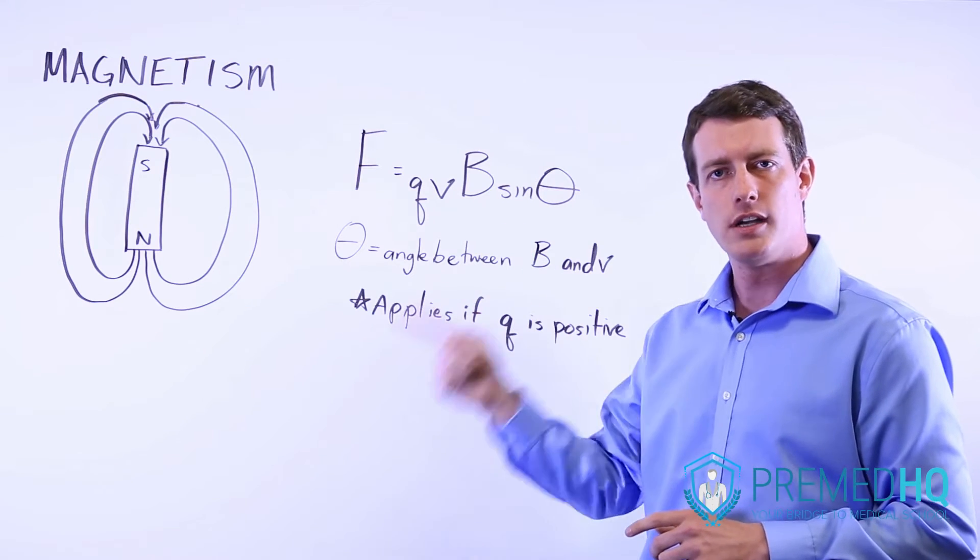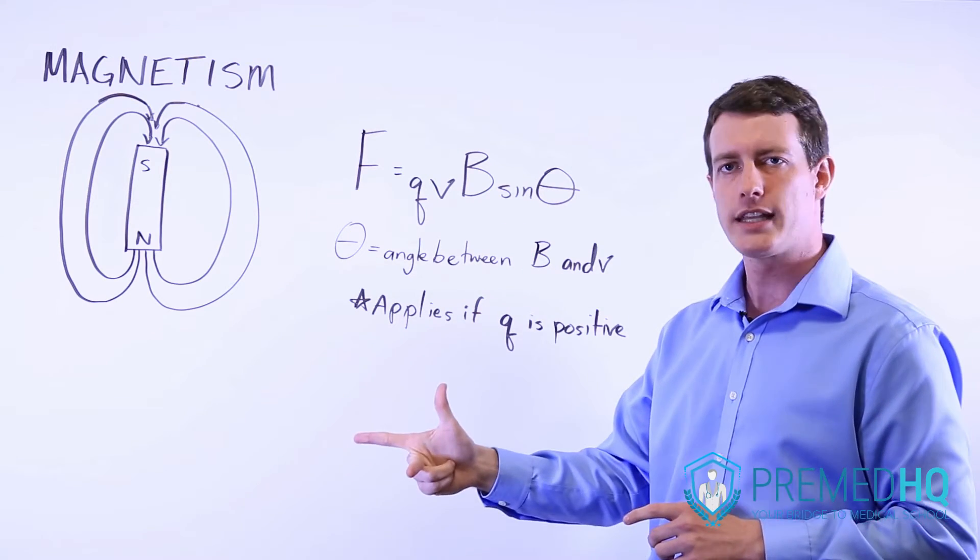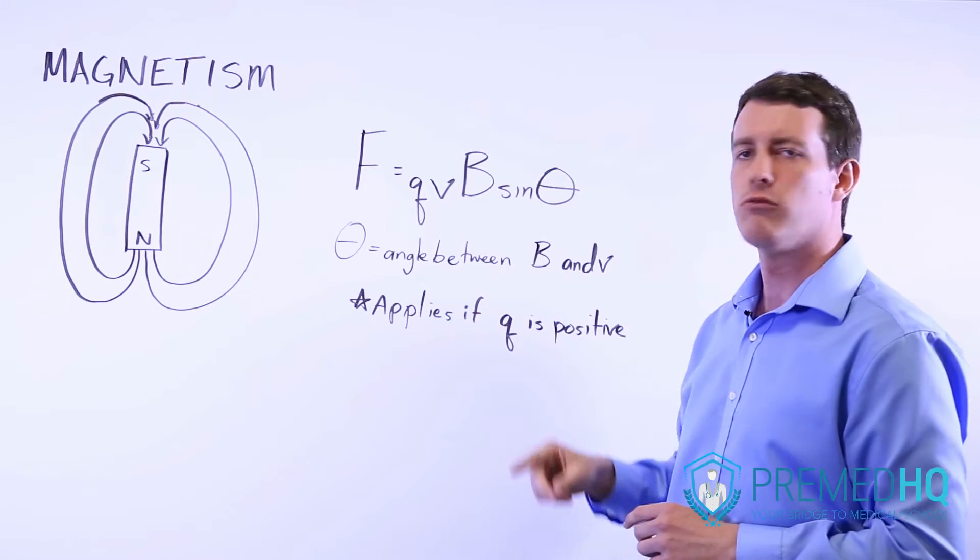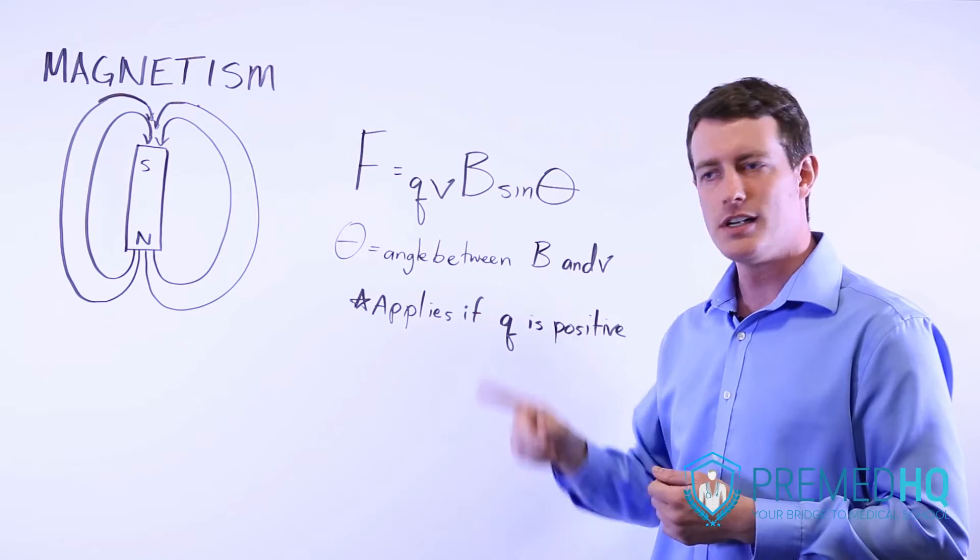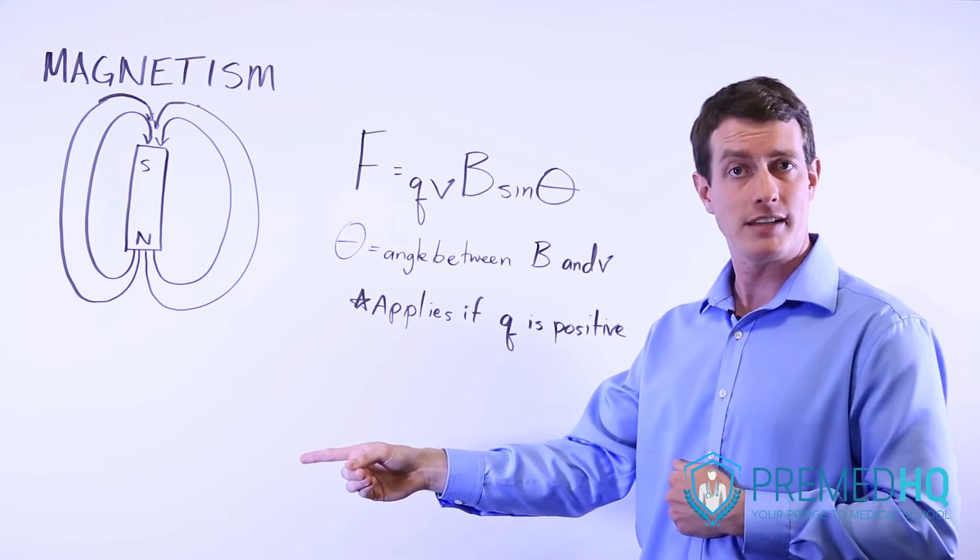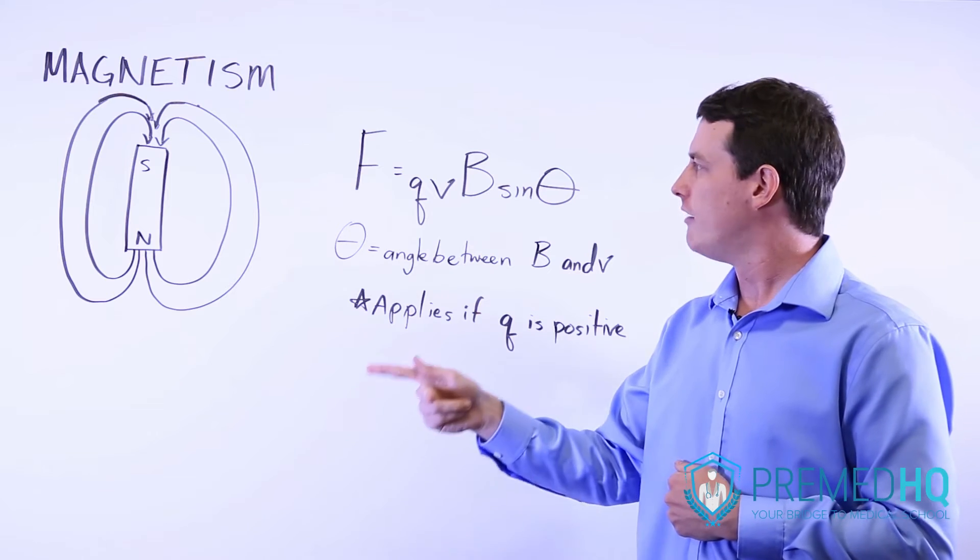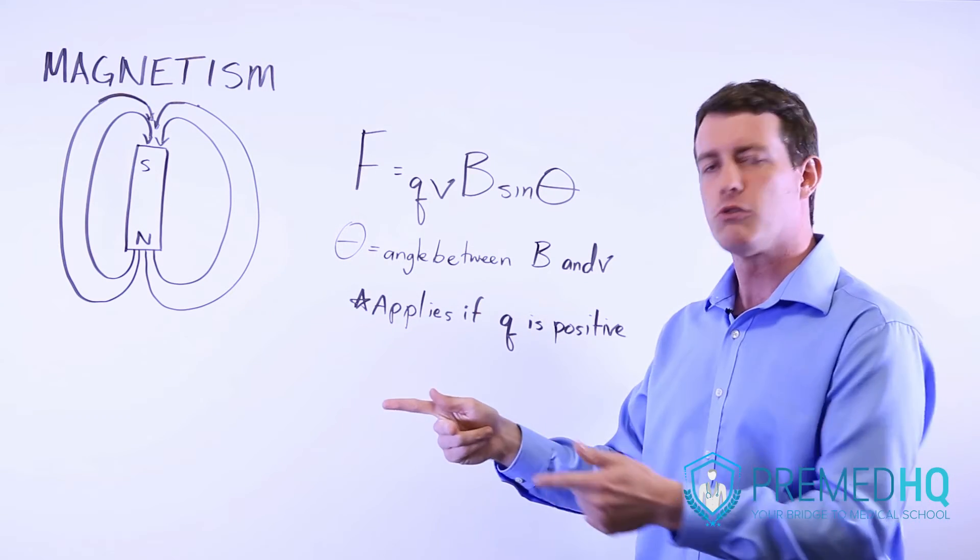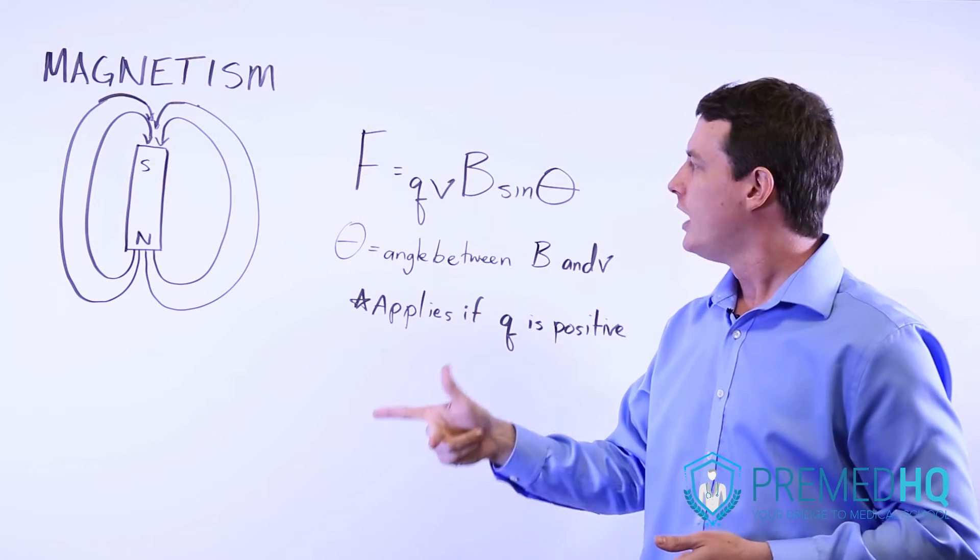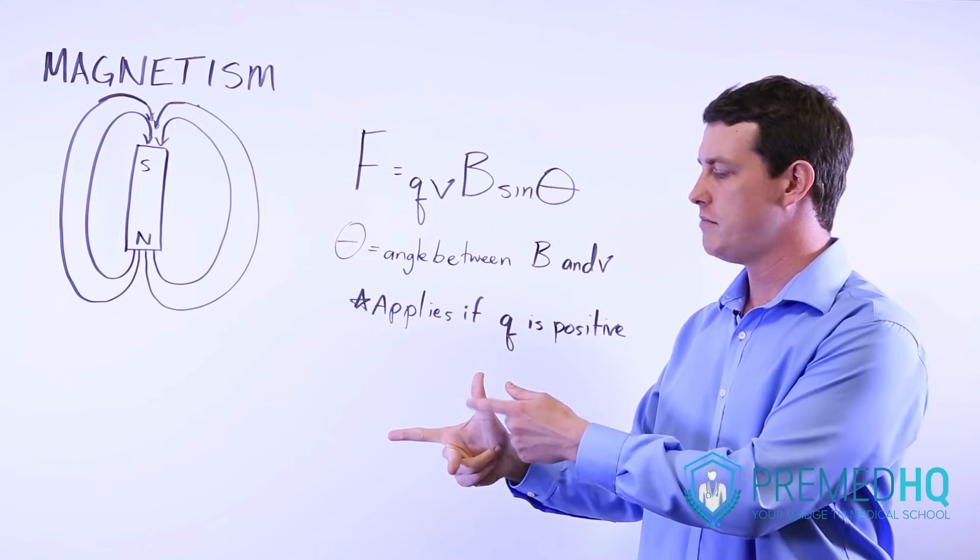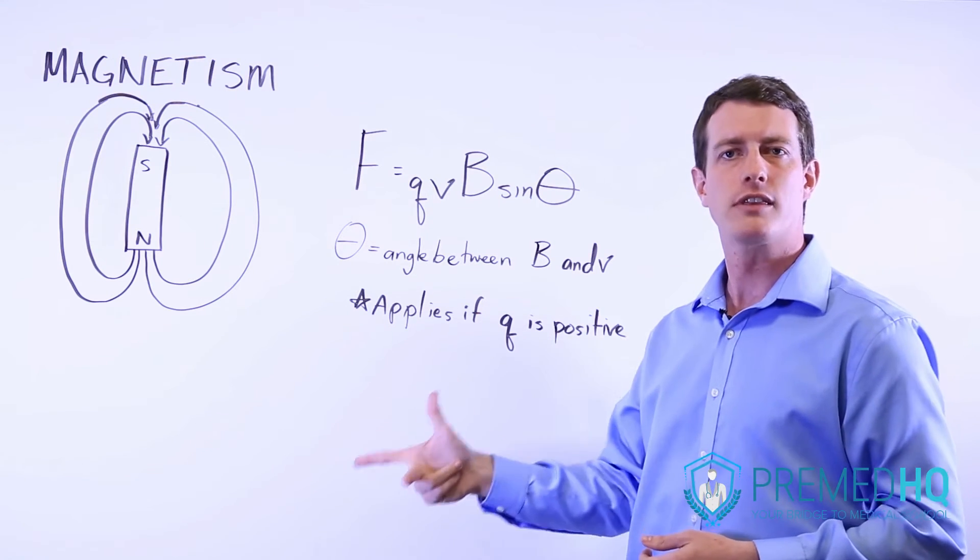The nice thing is if you do it in that order, index, middle, thumb like that, then the three vectors are represented in alphabetical order. So your index finger is B, the magnetic field. Your force is going to be in the direction of your middle finger, and the velocity is going to be in the direction that your thumb is facing.